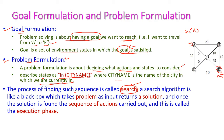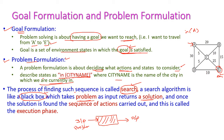A search algorithm is a black box — we don't know anything inside it. It takes a problem as input and returns a solution. Once the solution is found, the sequence of actions is carried out, and this is called the execution phase.